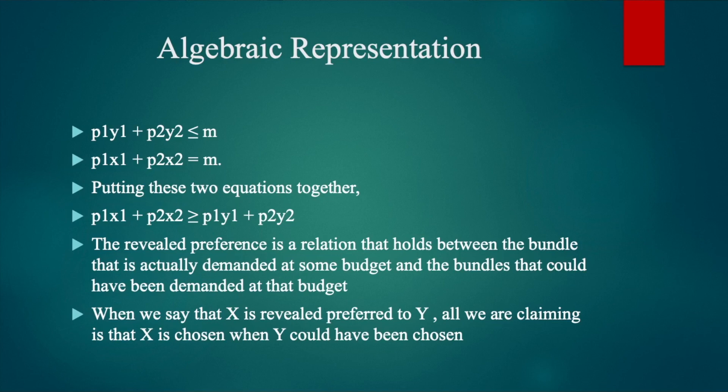For the bundle x1, x2, P1·x1 + P2·x2 is equal to M. Putting these two equations together, we get the result that P1·x1 + P2·x2 ≥ P1·y1 + P2·y2. That is, the total expenditure on bundle x1, x2 must be greater than or equal to the total expenditure on bundle y1, y2 for the idea of revealed preference to hold. Then only can we say that x1, x2 is directly revealed preferred to y1, y2.